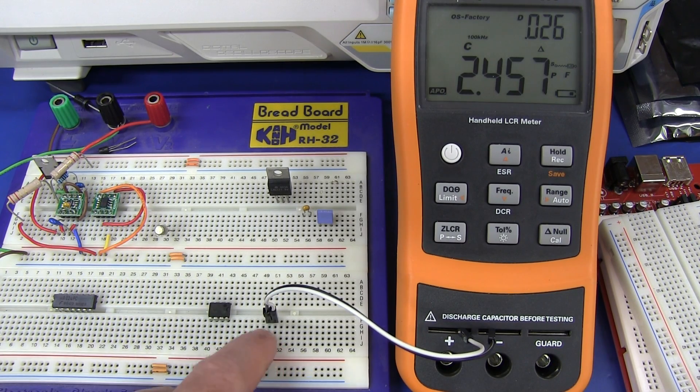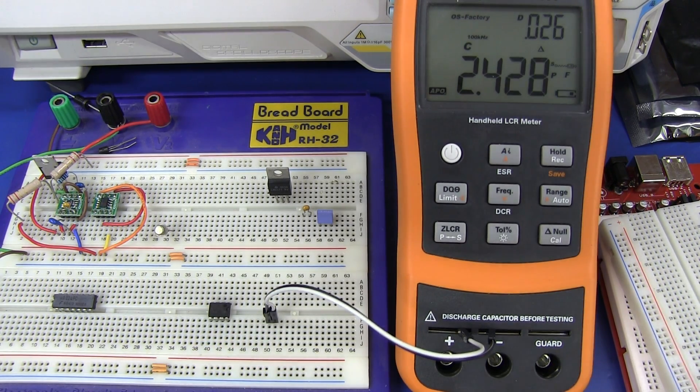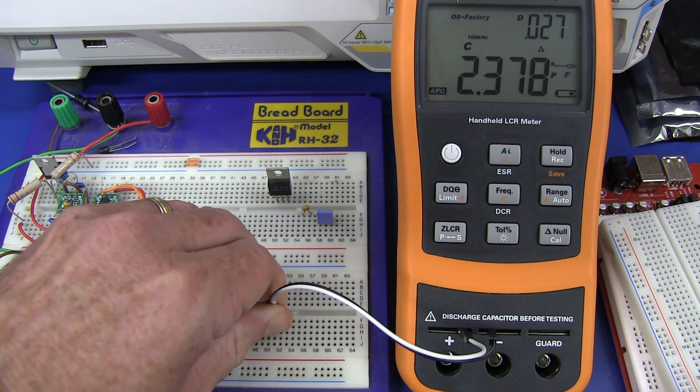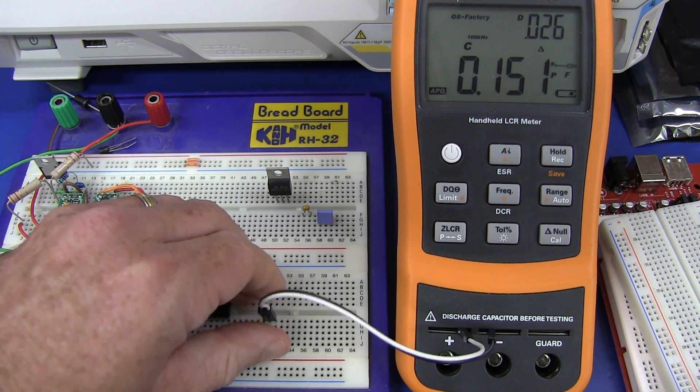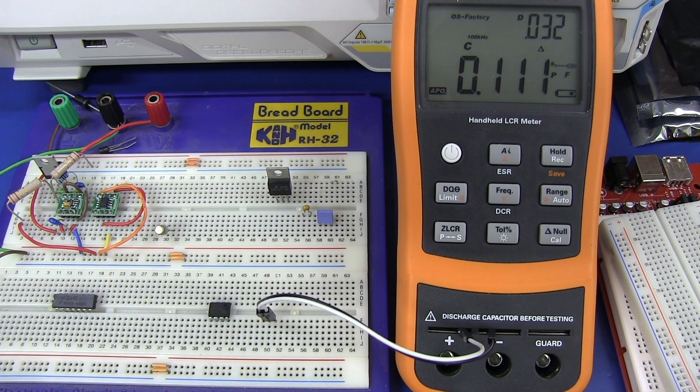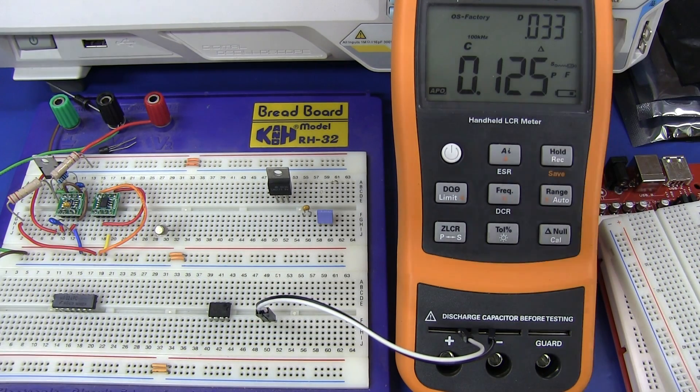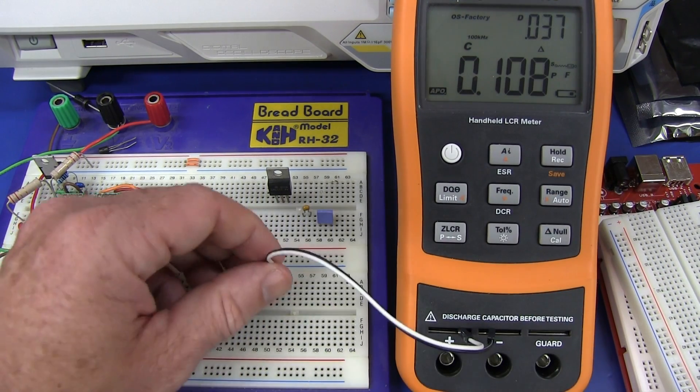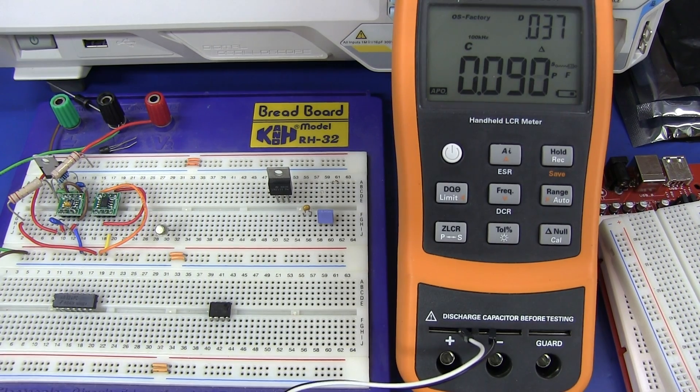Look at that! Two side-by-side contacts, it's only 2.4 picofarads. Look at that! So much for 20 or 10. And just to double check that, let's just remove that again and check the repeatability. Yeah, it's a little bit, I don't have these leads exactly right, but that's going to be near enough. We're in the order of 2 picofarads.